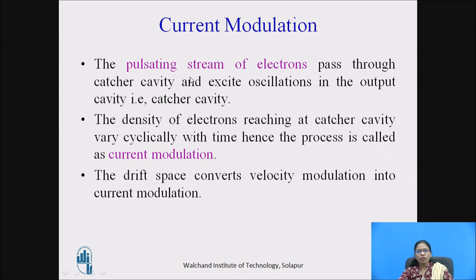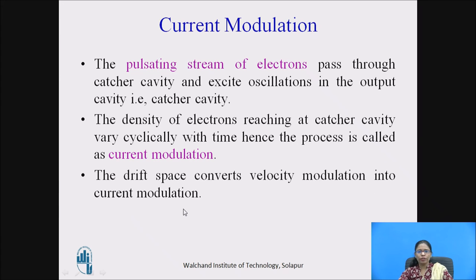Current modulation: The pulsating stream of electrons passes through the catcher cavity and excites oscillations in the output cavity. The density of this pulsating stream of electrons produces current modulation. The density of electrons reaching the catcher cavity varies cyclically with time, hence the process is called current modulation. The drift space converts velocity modulation into current modulation.